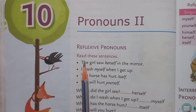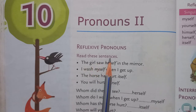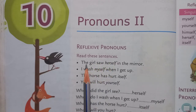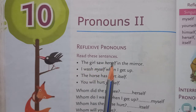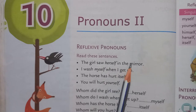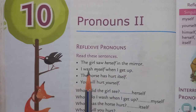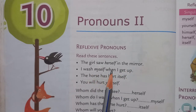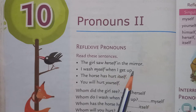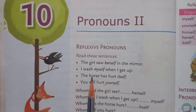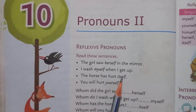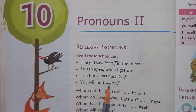Read these sentences. The girl saw herself in the mirror. I wash myself when I get up. The horse has hurt itself. You will hurt yourself.